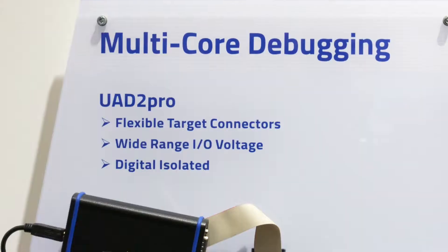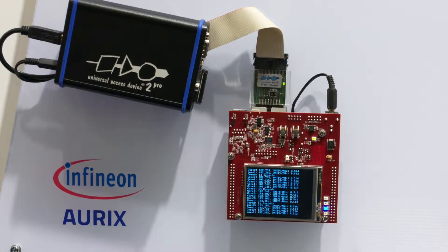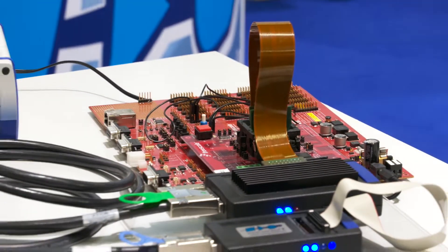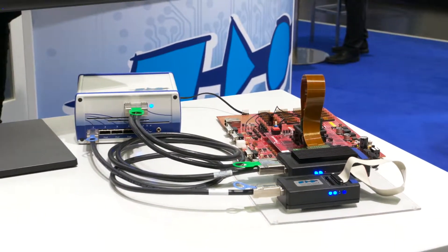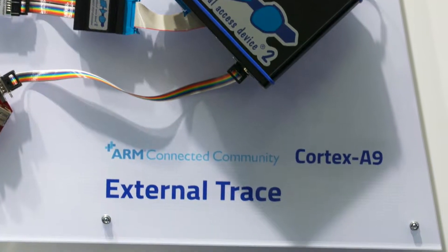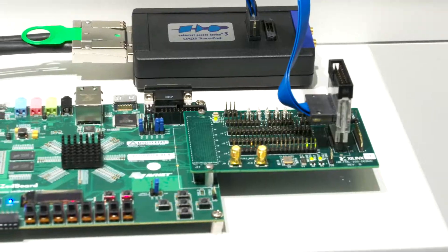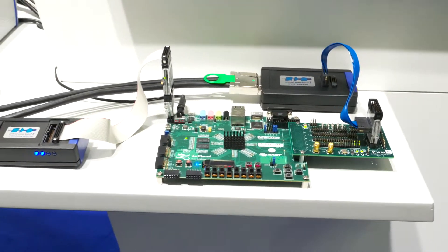To summarize, PLS offers fast and flexible access to the target, and efficient and intuitive multi-core debugging and trace. Our software has a comprehensive software API for test automation and integration in developer workflows, and last but not least, we offer in-depth architecture support. This was our news from embedded world. Thank you for your interest — please visit our website or contact us.